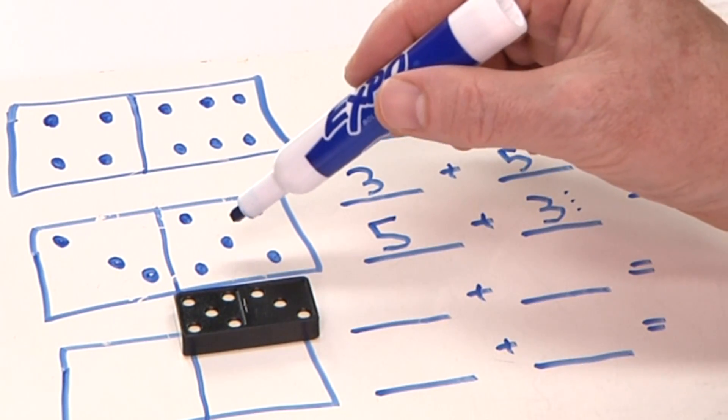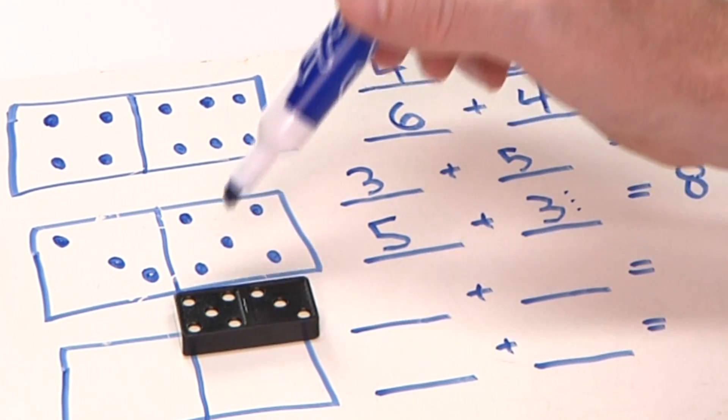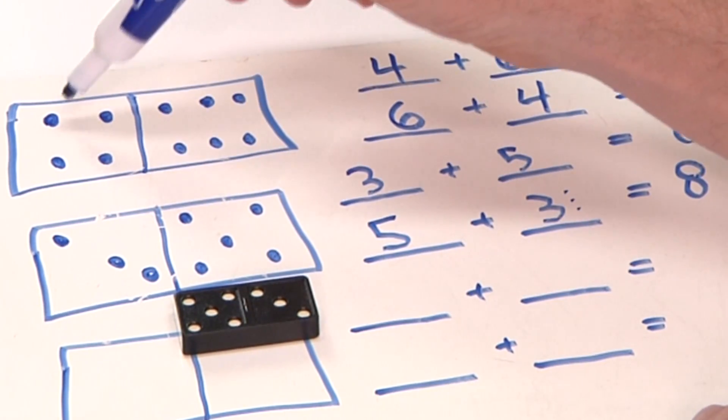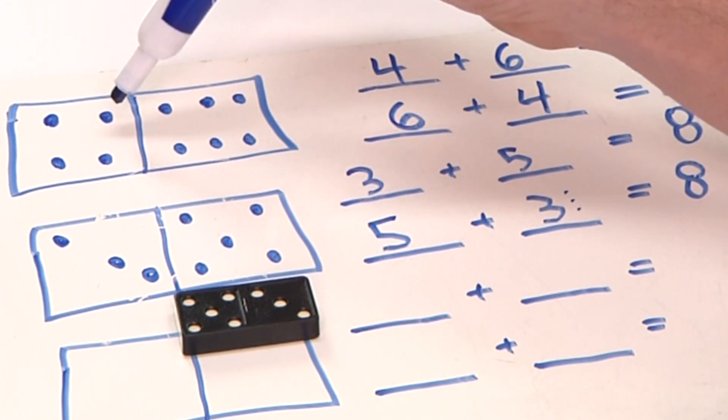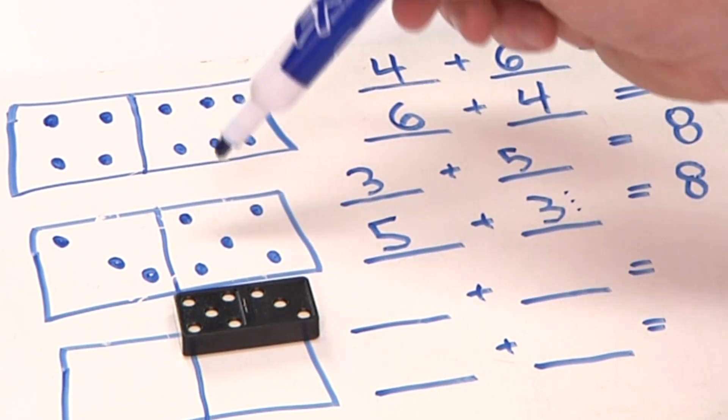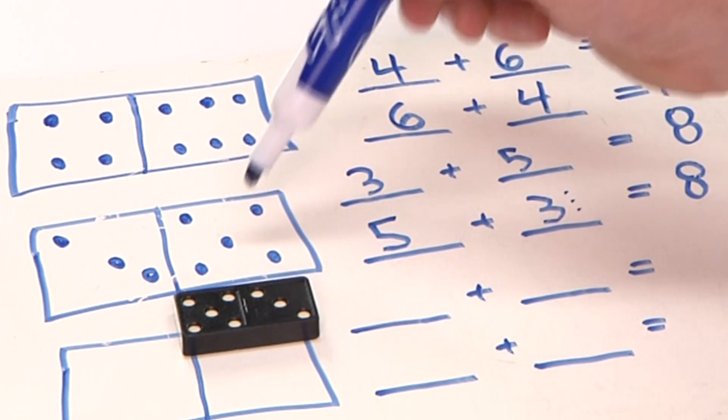I really like adding domino dots because I picture them in my mind, and it's easy for me to count numbers. For example, when I take 6 plus 4, I can imagine the 6 dots in my mind. This is one strategy I use to add numbers.